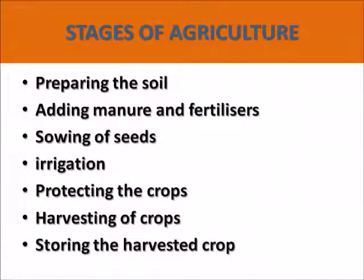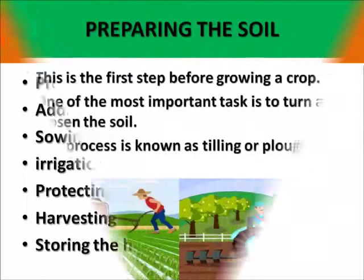Next are the stages of agriculture. There are various stages of agriculture: preparing the soil, adding manure and fertilizers, sowing of seeds, irrigation, protecting the crops, harvesting of crops, and last is storing the harvested crop. So we have seven stages of agriculture which start from preparing the soil and end at storing the harvested crop.